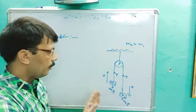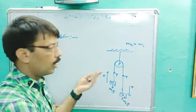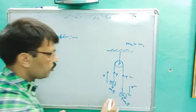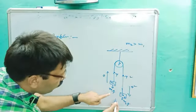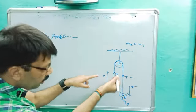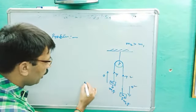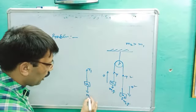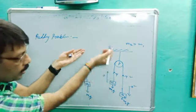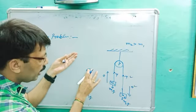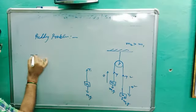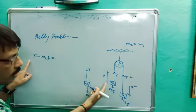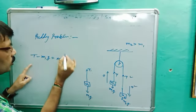When M2 is greater than M1, M1 will go up and M2 will come down. For the body going up, the upper force is T and the lower force is M1G. Since M1 is going up, T is greater than M1G. So we write the equation: T minus M1G equals M1A. This is equation number one.